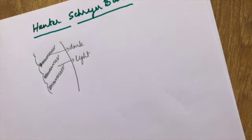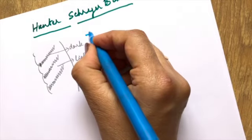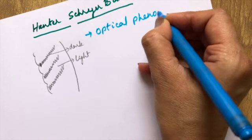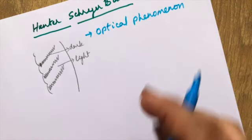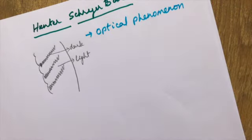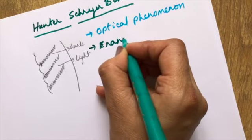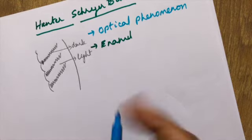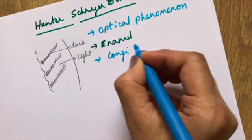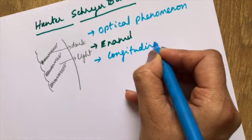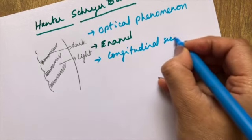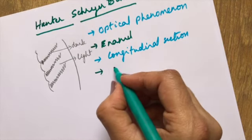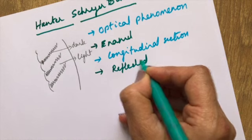We will understand what exactly it is. It is thought to be an optical phenomenon. We see it in the enamel, under a longitudinal ground sectioned tooth, and under reflected light.